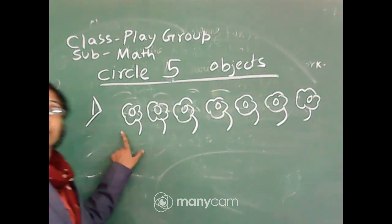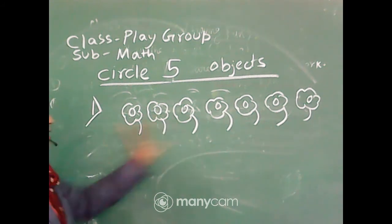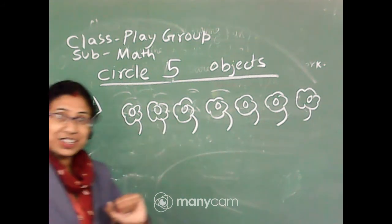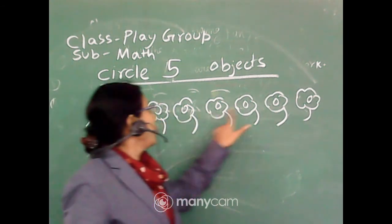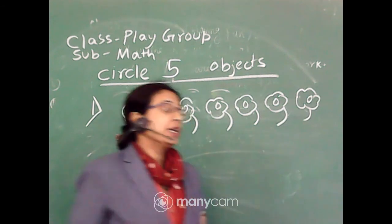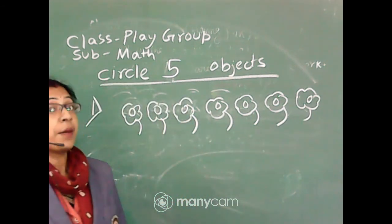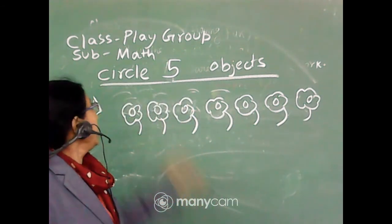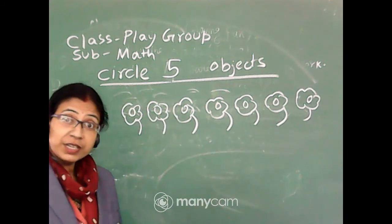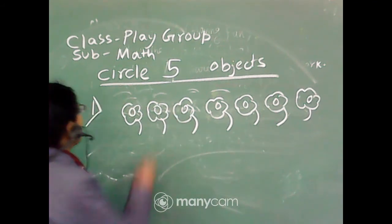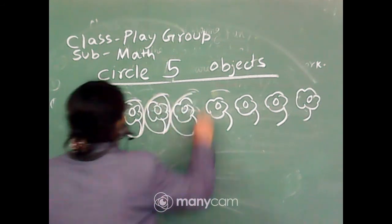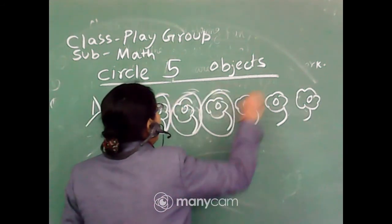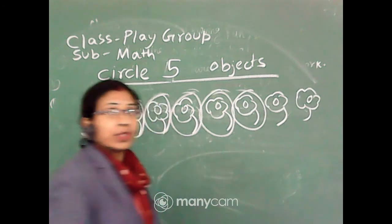Can you see the board? There are some flowers. Count at first: how many flowers are there? One, two, three, four, five, six, seven. Seven flowers are there. But what is our heading? Circle five objects. So we just circle out five: one, two, three, four, five. Okay?